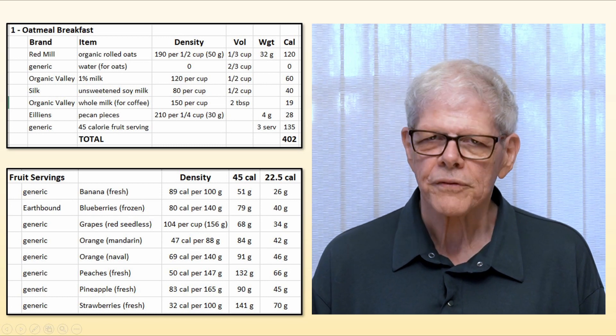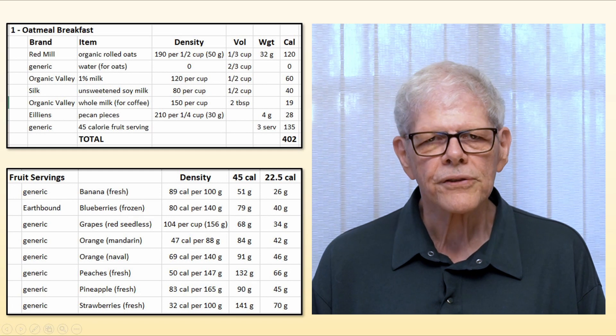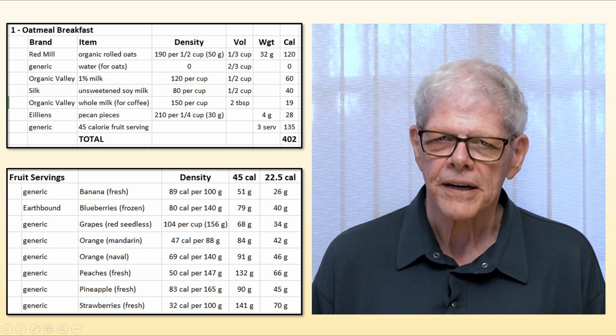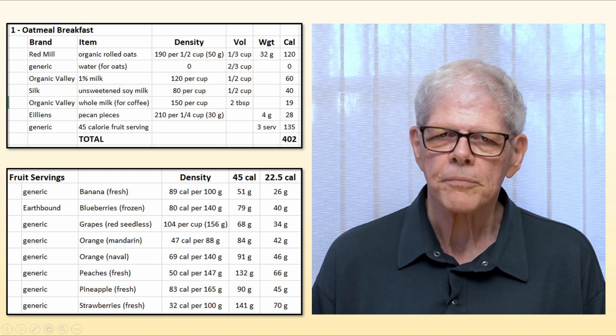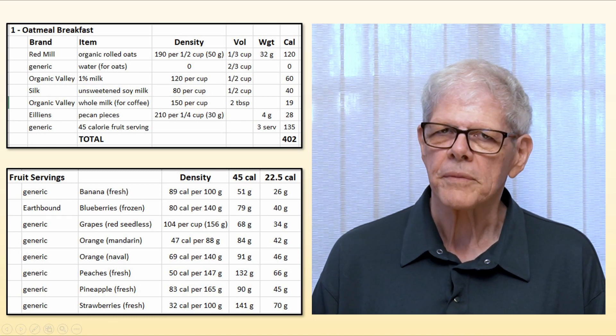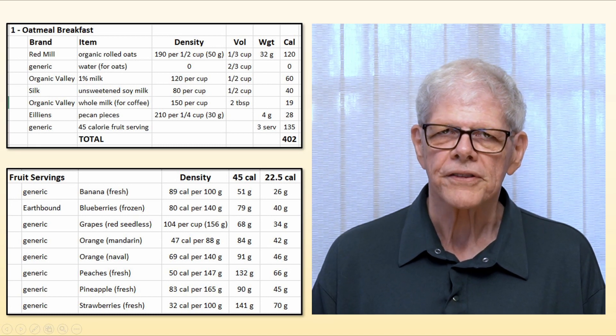The second graphic shows how much of each fruit I can have for 45 calories. It also shows how much I can have for half that amount. On occasion, rather than having a whole serving of pineapple, for example, as one of my servings, I might have half a serving of pineapple and half a serving of strawberries.